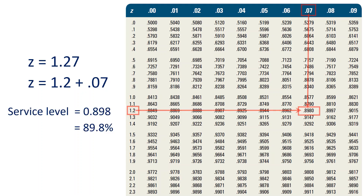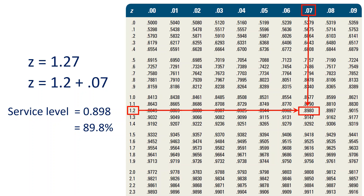Consequently, the service level is 0.898, or 89.8%. Conversely, if the operations manager decided to have a service level of 99%, this means that the area under the curve is 0.99, and it is required to find the value of z corresponding to this area.